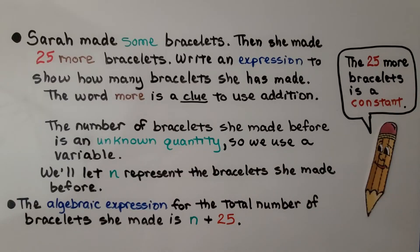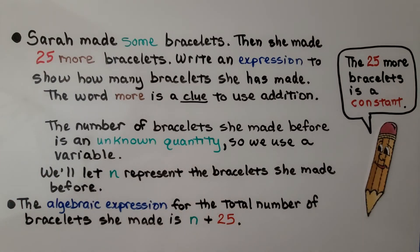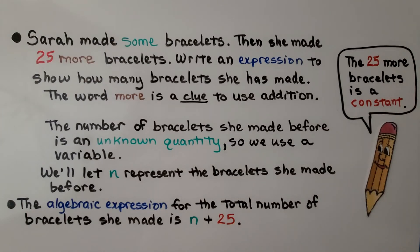Sarah made some bracelets, then she made 25 more bracelets. Write an expression to show how many bracelets she has made. The word 'more' is a clue to use addition. She made some, then 25 more. The number of bracelets she made before is an unknown quantity — we just know she made some — so we use a variable. We'll let n represent the number of bracelets she made before. 25 is our constant. The algebraic expression for the total number of bracelets she made is n plus 25.